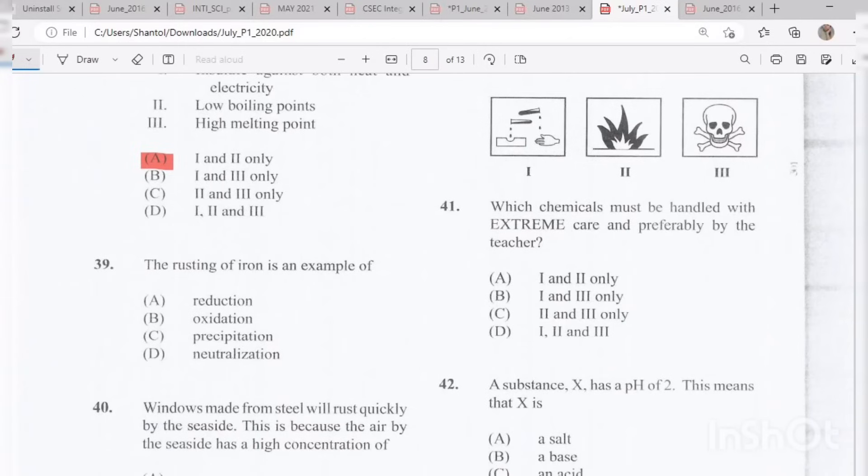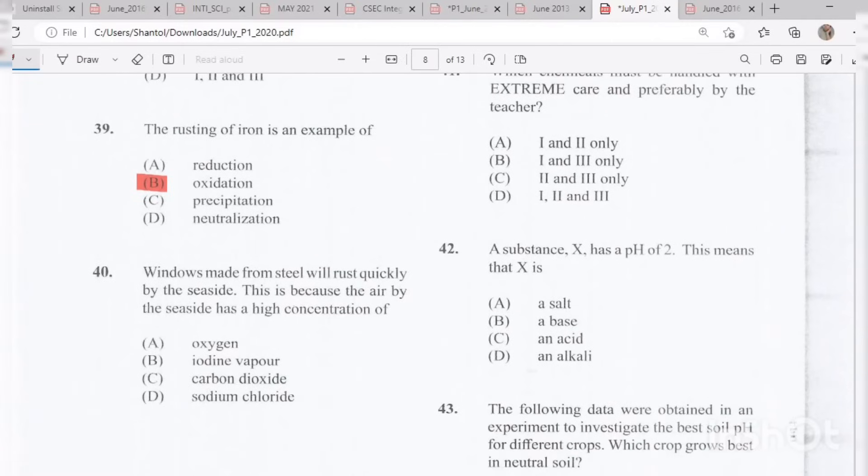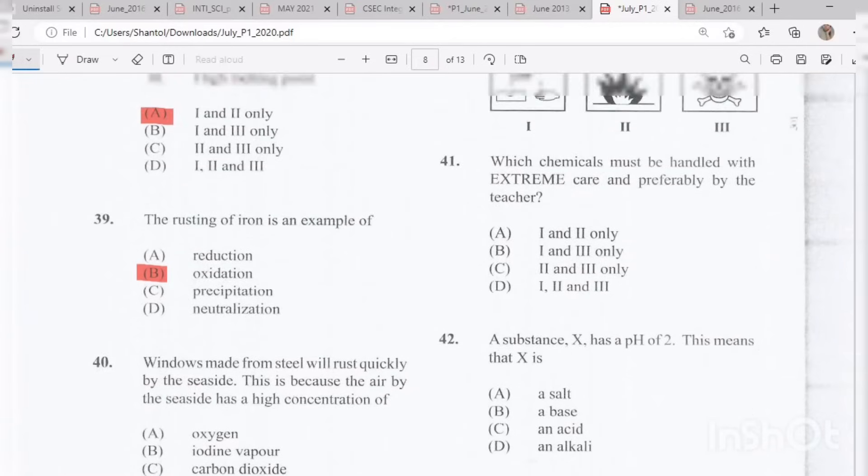Question 38: Which of the following characteristics represent most nonmetals? The answer is A, insulates against both heat and electricity and it has a low boiling point. Question 39: The rusting of iron is an example of B, oxidation. Question 40: Windows made from steel will rust quickly by the seaside. This is because the air by the seaside has a high concentration of D, sodium chloride. And remember sodium chloride is the chemical name for table salt.